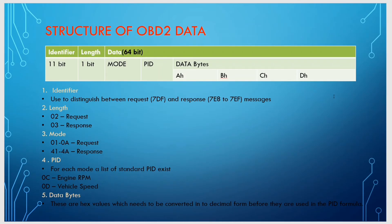The 64-bit OBD2 data is divided into mode, PID, and data bytes. The mode ranges from 0x01 to 0x0A for requests, and from 0x41 to 0x4A for responses. For each mode, a list of standard PIDs exists — for example, engine RPM uses PID 0x0C and vehicle speed uses PID 0x0D. There are many such PIDs associated with specific faults or parameters.